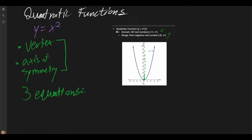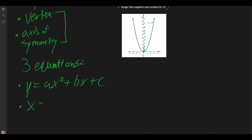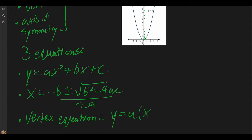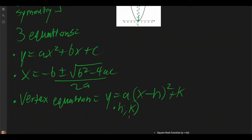With quadratic functions, there are three typical equations to keep in mind. First, our basic algebraic function: y is equal to ax squared plus bx plus c. Second, x is equal to negative b plus or minus the square root of b squared minus 4ac, all over 2a. And finally, we have our vertex equation: y is equal to a times the quantity x minus h, squared, plus k, where h and k represent the vertex.